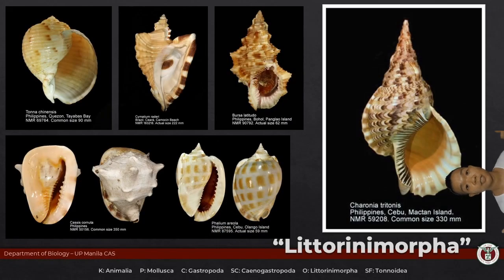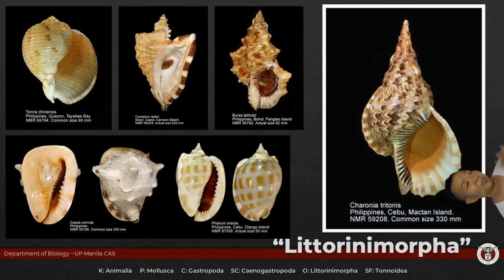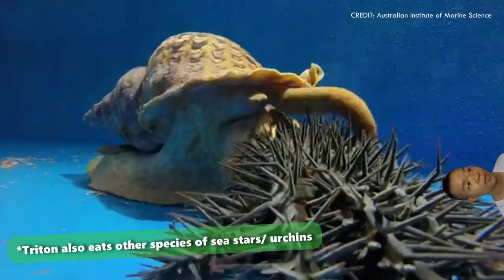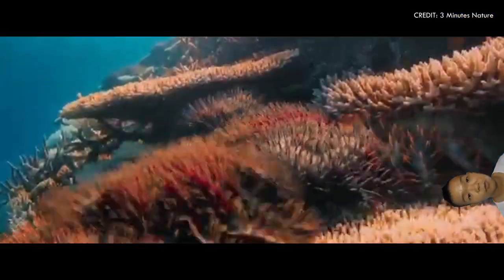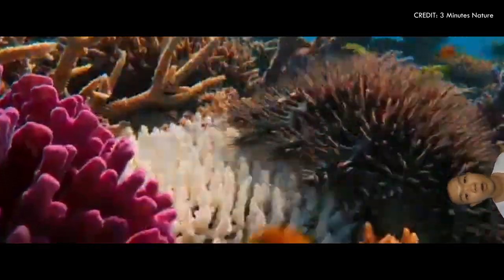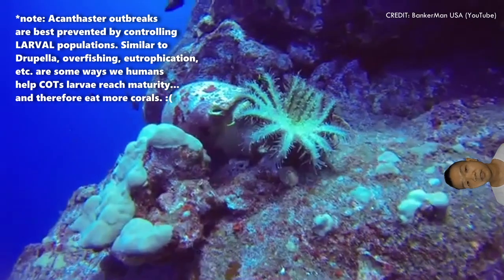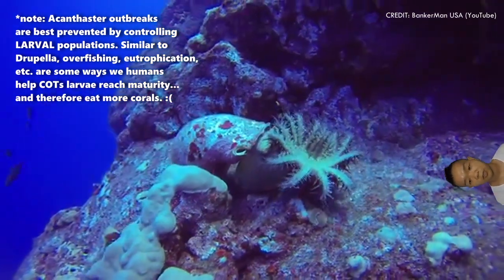This is superfamily Tonoidea — so this includes tun shells, helmet shells, and triton shells. Charonia — this is actually a predatory species. And not all predators are neogastropods. What it eats is the crown of thorns sea star, which is important because the crown of thorns sea star is also a coral eater, much like the Drupella we mentioned earlier. Having a healthy reef ecosystem means you need these gastropods as well.